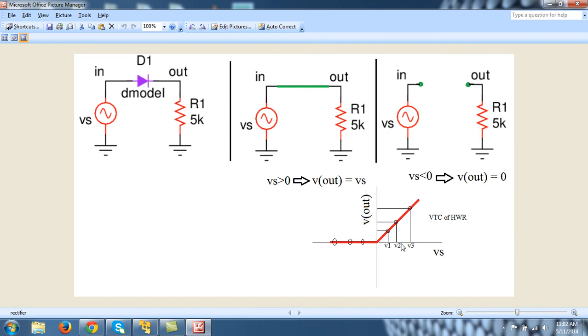If you put these two equations in graphical form, the graph will be something like this. This type of thing is called VTC or voltage transfer characteristic curve for a particular circuit. So this is VTC for half-wave rectifier. The same information is being conveyed here. Whenever vs is greater than zero, vout equals vs, this is slope 1. And whenever vs is less than 0, output is 0.